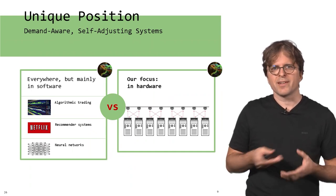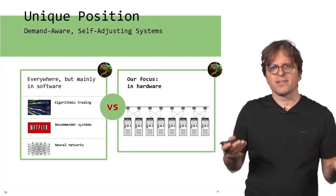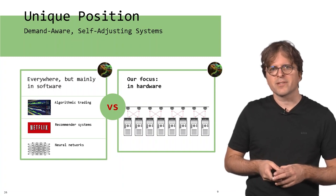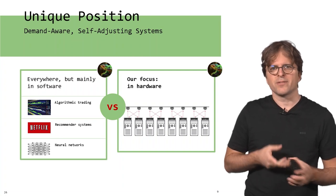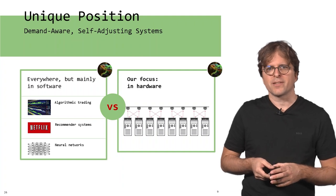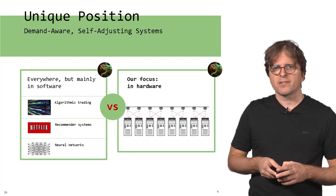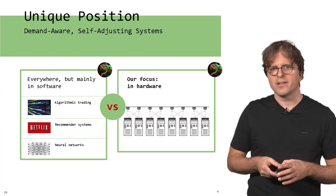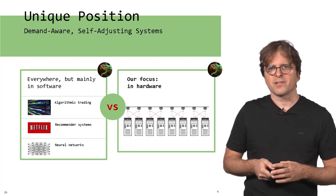The position is quite unique. Of course, there are a lot of systems currently becoming self-adjusting - it's a big trend. You can see recommender systems of Netflix as self-adjusting systems, even algorithmic trading, and neural networks that adapt based on the data. One difference here to our perspective in this course is that our adjustments are happening in hardware. We are making these self-adjustments not in software, but in hardware.